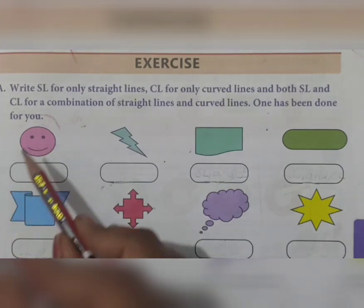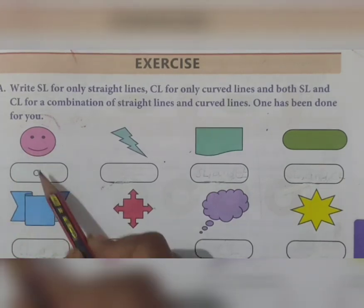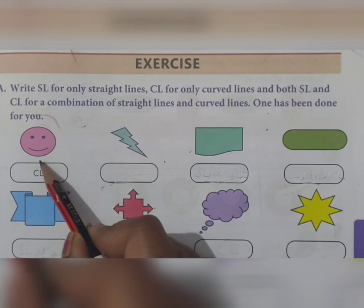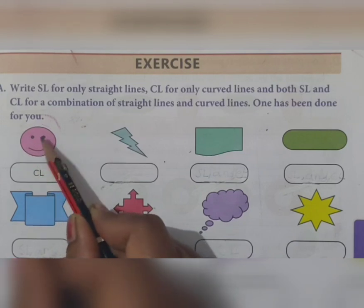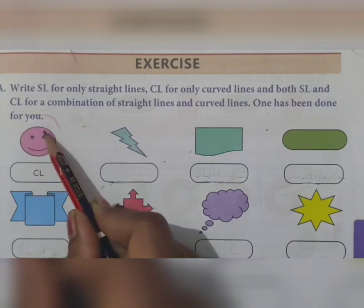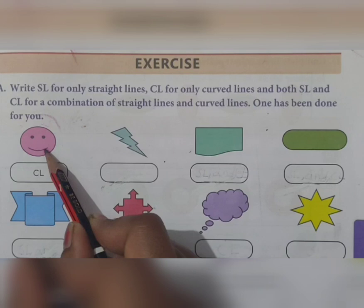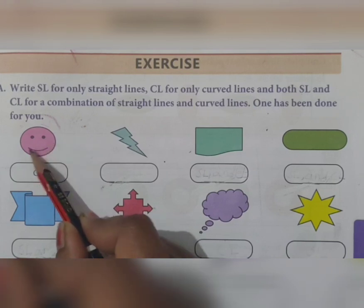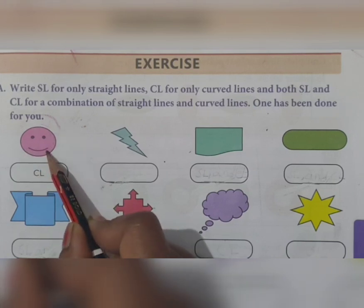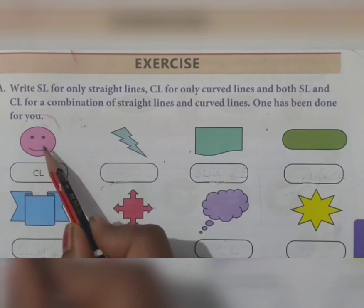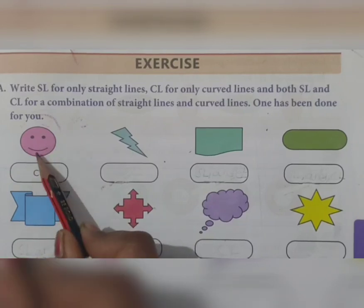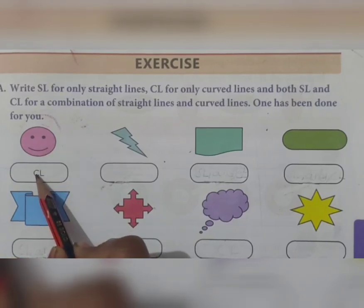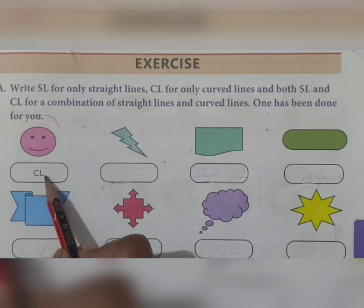Now see - the first one you have given as SL. See here: there is a circle, two dots, and a smiley. In this figure, if you observe, there is no straight line at all. All lines are curved lines, therefore this figure is made up of only curved lines, so we write CL - C for curved, L for line.